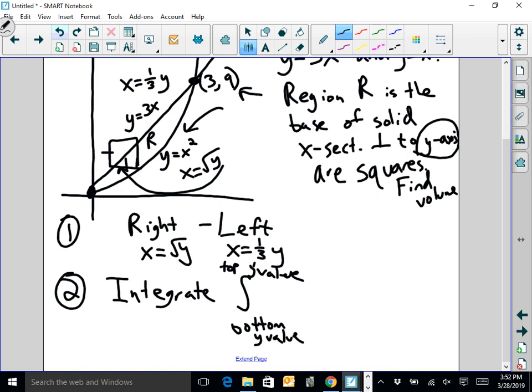So if I want to figure out what this volume is going to be, here's what it's going to be. Here's going to be my answer. The volume is going to be the integral from the bottom intersection. This intersection right here is 0, 0. So I want that y value, which is 0, to the top y value, which is 9. I'm stacking up these squares all the way up to a height of 9.